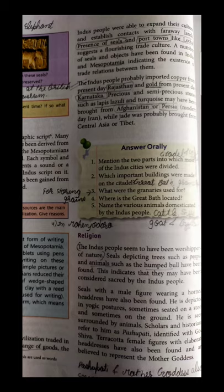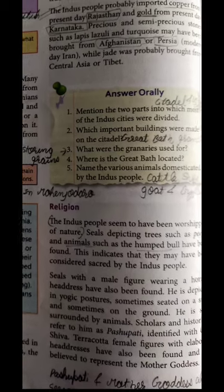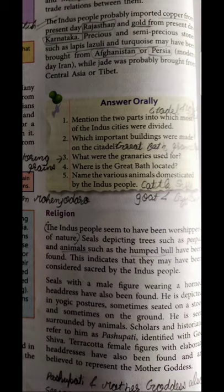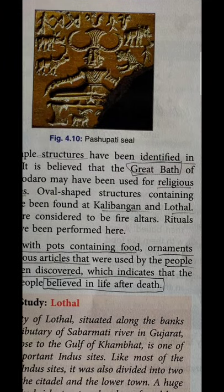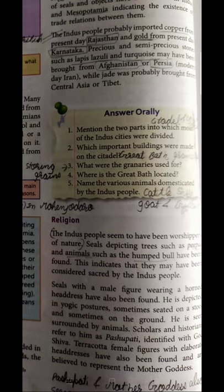Now we are going to understand about the religious practices of those people. They also had beliefs in god. The worshipping nature of the Indus people — they worshipped trees, animals, and others. They started worshipping the god Pashupati and Mother Goddess. A male figure wearing a horned headdress was found in a yogic posture. The Pashupati seal shows the male god — the people of Indus Valley Civilization worshipped the male god Pashupati, which is actually the Shiva god. The female god worshipped by them is the Mother Goddess.